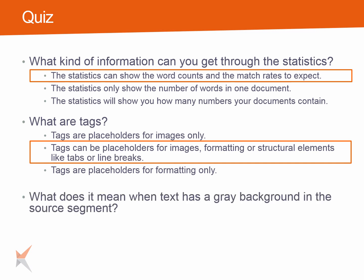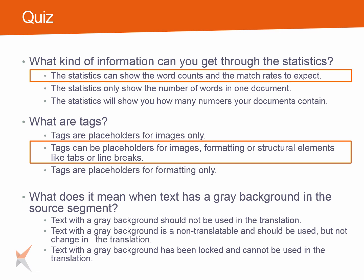Third question: What does it mean when text has a grey background in the source segment? The possible answers are: Text with a grey background should not be used in the translation. Text with a grey background is a non-translatable and should be used but not changed in the translation. Or, text with a grey background has been locked and cannot be used in the translation. The correct answer is: Text with a grey background is a non-translatable and should be used but not changed in the translation.